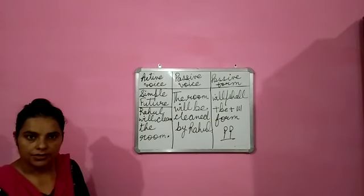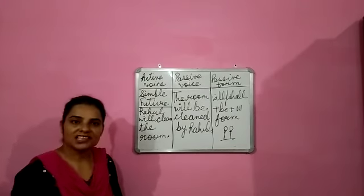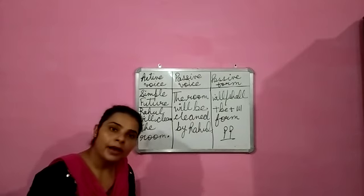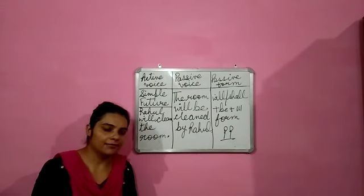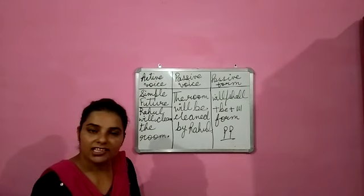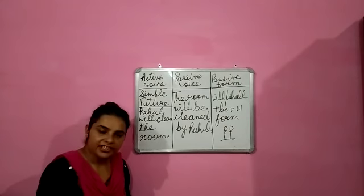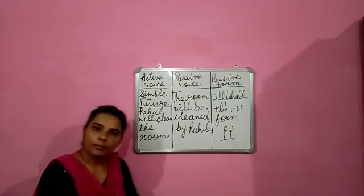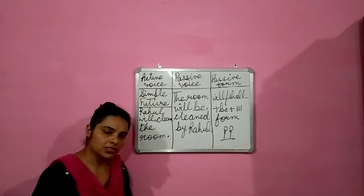Now see the meaning: 'Rahul will clean the room' — Rahul kamra saaf karayga. 'The room will be cleaned by Rahul' — kamra Rahul ke dwara saaf kiya jaega. The meaning is the same in both sentences — just the voice of the sentence is changed. This is known as the conversion from active to passive voice. Any doubt or confusion, you can ask in the virtual class. Alright students, bye bye.